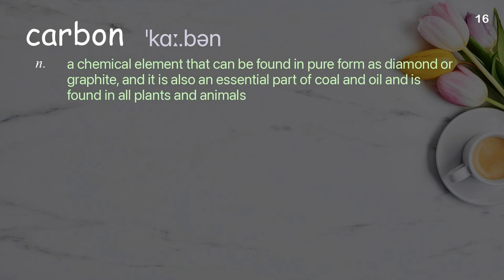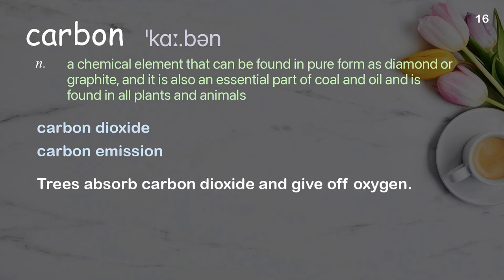Carbon. A chemical element that can be found in pure form as diamond or graphite, and is also an essential part of coal and oil and is found in all plants and animals. Examples: carbon dioxide, carbon emission. Trees absorb carbon dioxide and give off oxygen.